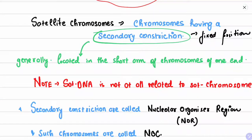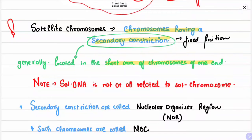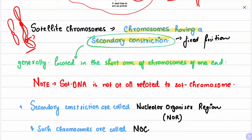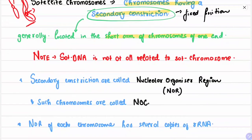Satellite chromosomes are different from satellite DNA. Satellite chromosomes are chromosomes having a secondary constriction. This secondary constriction is usually at a fixed position, generally located in the short arm of one end of the chromosome. The small segment beyond the secondary constriction is called the satellite, and chromosomes containing such a constriction are called satellite chromosomes. Important note: satellite DNA is not at all related to satellite chromosomes — it is a false assumption that satellite chromosomes contain satellite DNA.